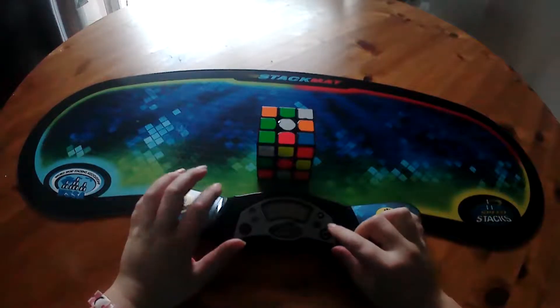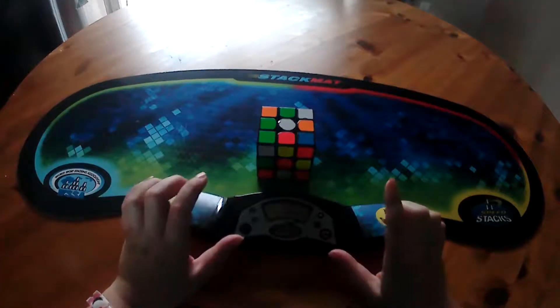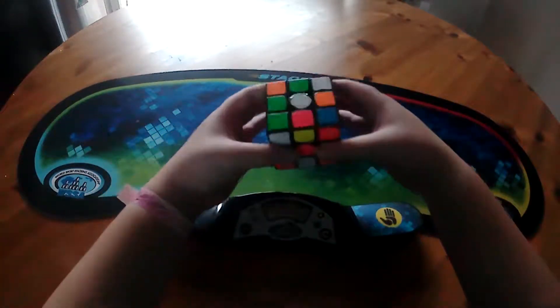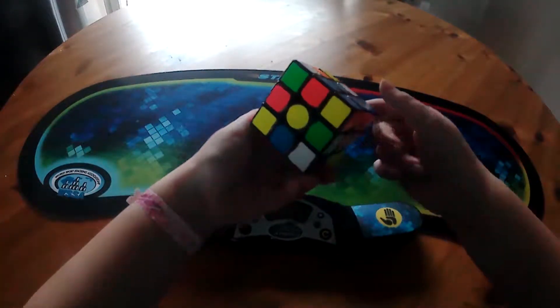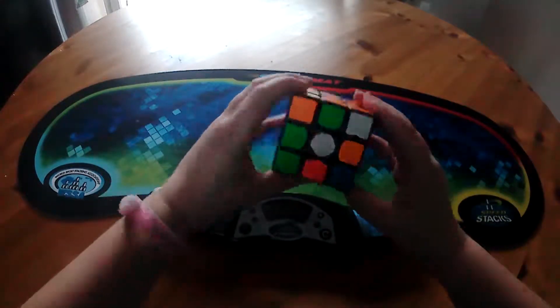Okay, so we've got the scrambled cube, a stack mat, and my mat, and so I'm going to be doing a solve. I'm just going to do some inspection. Okay, I don't really know what I'm going to go for, but we'll just see.